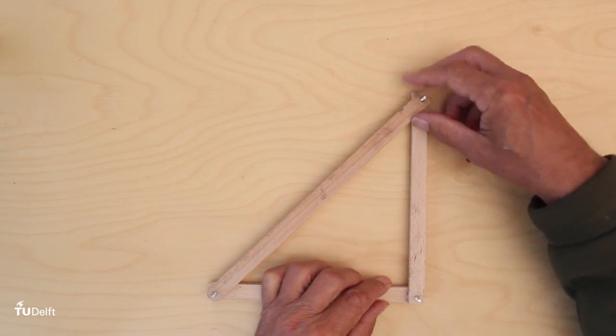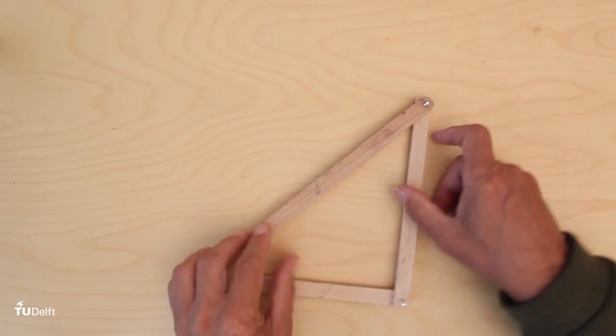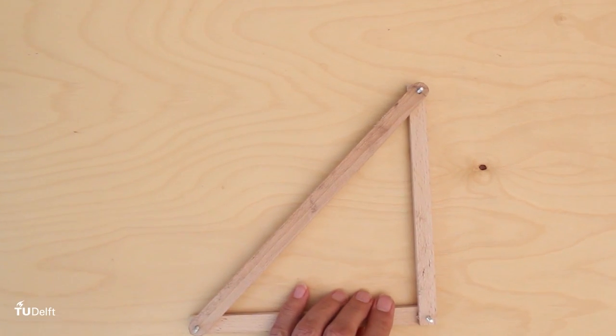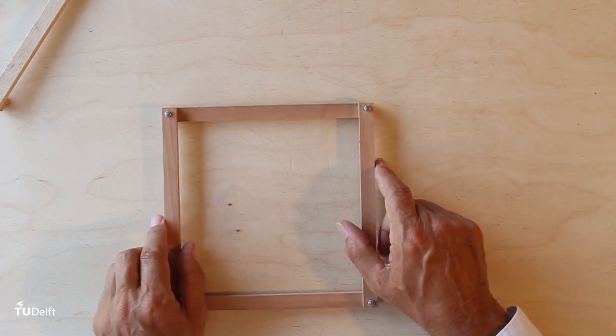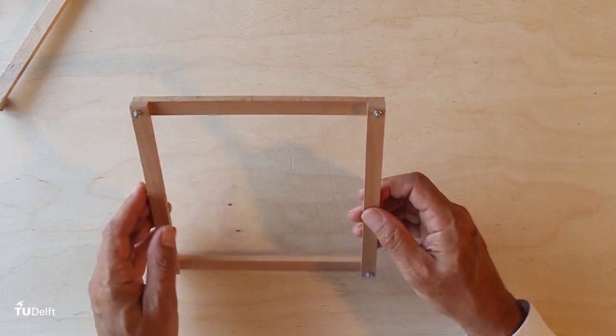As you see, a triangle has a fixed form. If you try to deform it, it doesn't give way. One doesn't need to fix the connections very tight; just a pin is enough. This is in contradiction to a rectangular square or whatever frame that has more than three angles.